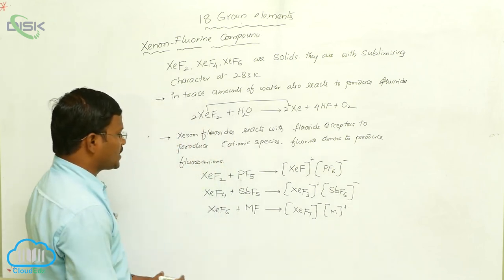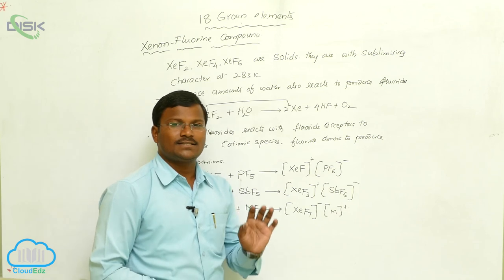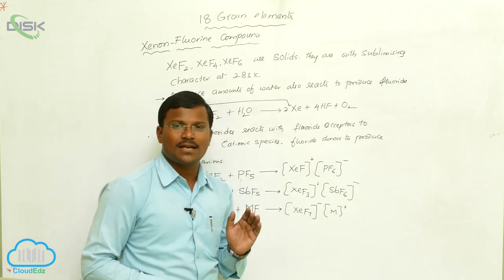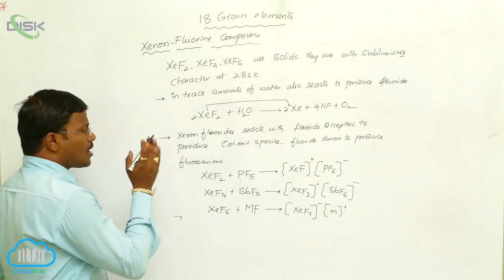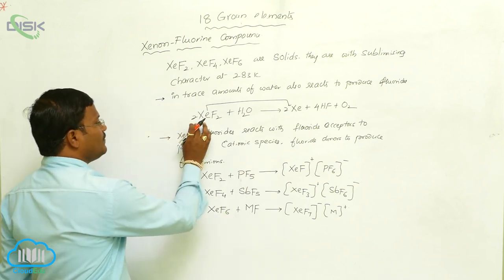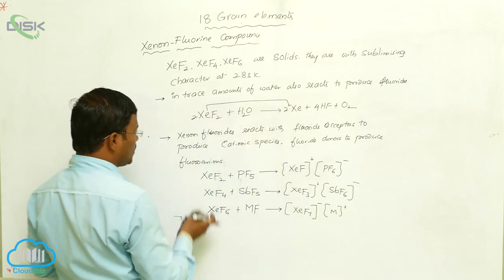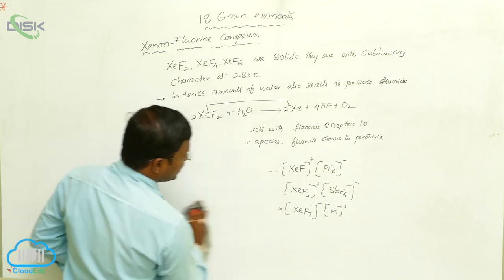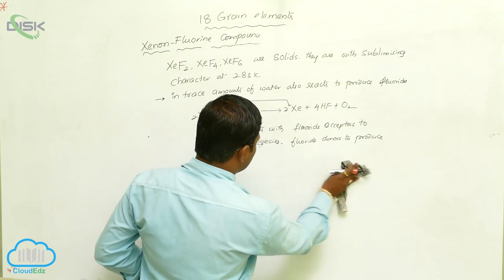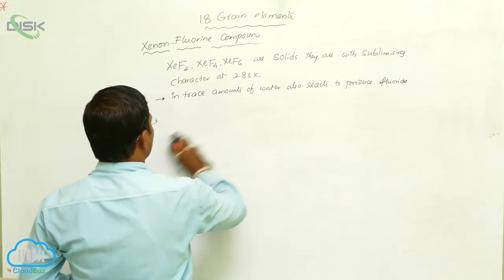So this is the reactivity, and we have to learn that xenon difluoride, xenon tetrafluoride, and xenon hexafluoride are strong fluorinating agents. Due to their strong fluorinating character, they even react with trace amounts of water to produce xenon and hydrogen fluoride. This covers some properties of xenon difluoride, xenon tetrafluoride, and xenon hexafluoride.